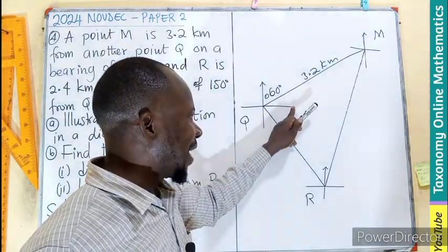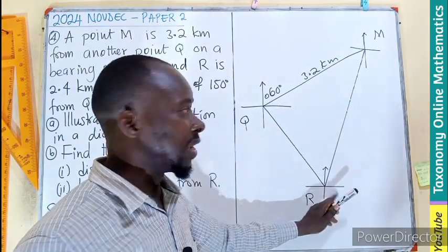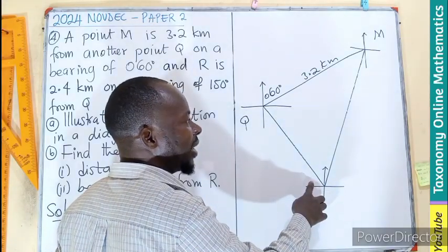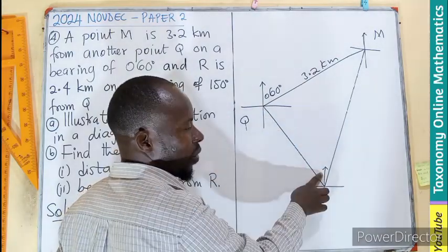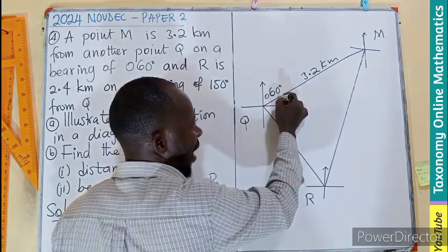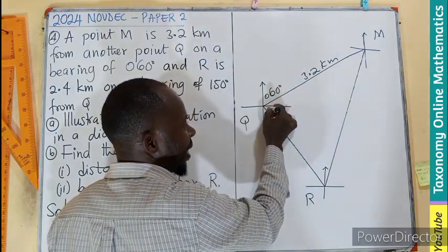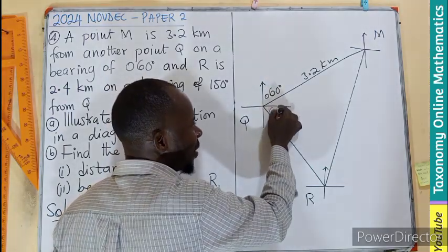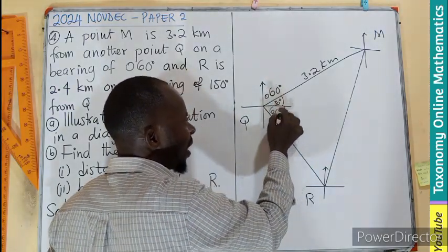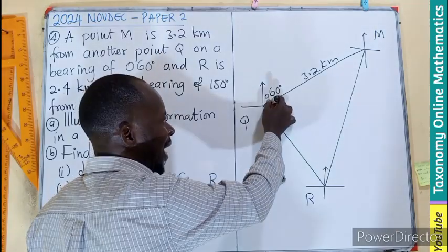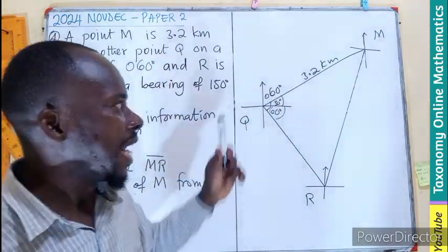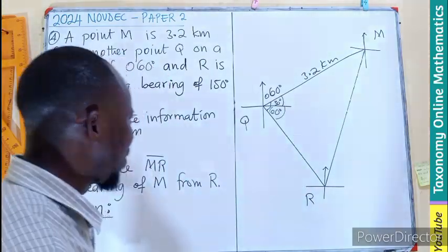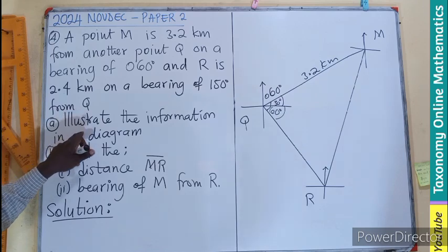Making sure that this line is parallel to this line, the angle here will be the angle there. Whatever angle I have here is the one going to be there. We have 30 degrees here, 60 degrees there. 60 plus 90 gives us 150. So I can have 60 degrees, 30 degrees, and that gives rise to 90 degrees. This being 90 means the triangle is a right-angled triangle.